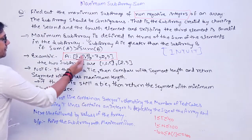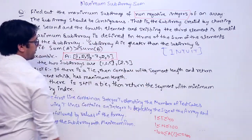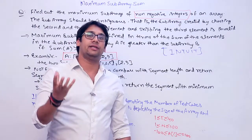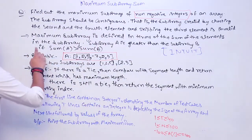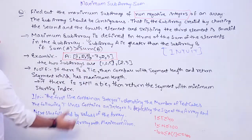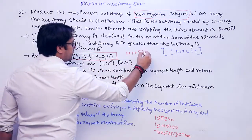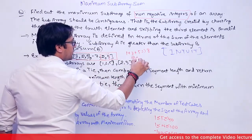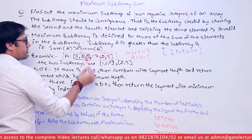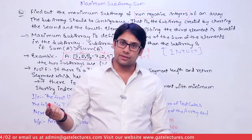The maximum subarray is defined in terms of the sum of its elements. For example, 1 + 2 + 5 = 8, so the sum of that subarray is 8. Subarray A is greater than subarray B if the sum of A is greater than the sum of B. For example, if the first subarray is 1, 2, 5 with sum 8, and the second subarray has 2 + 3 = 5, then the first subarray is greater because its sum is larger.